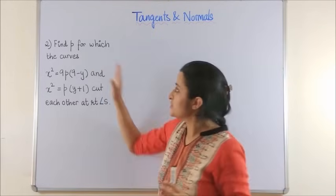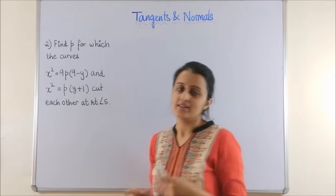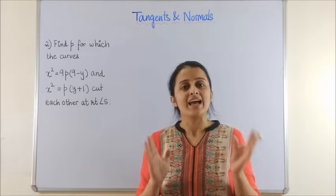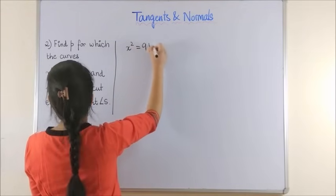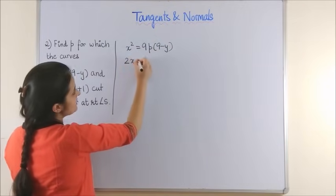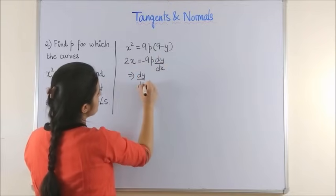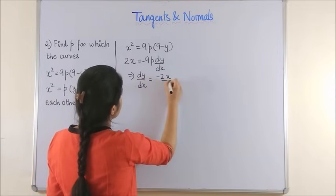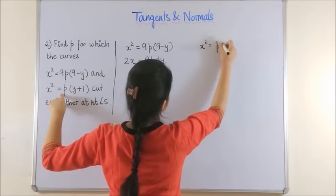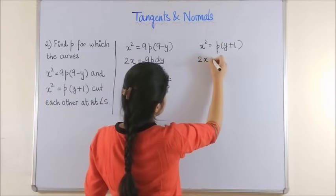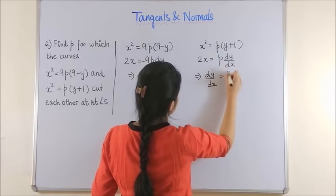A very similar question: find the value of p for which the given curves cut each other at right angles. Once again we will use the condition of two orthogonal curves to find the unknown. Differentiating curve 1 with respect to x gives dy/dx = −2x/(9p). Similarly, for curve 2, x² = p(y + 1), differentiating gives 2x = p·(dy/dx), so dy/dx = 2x/p.